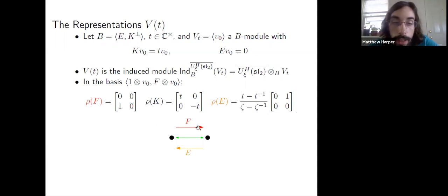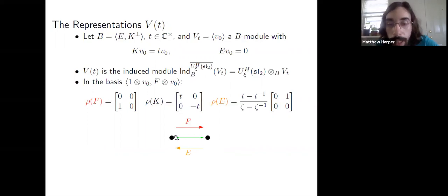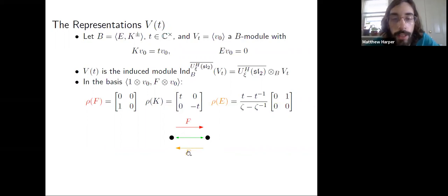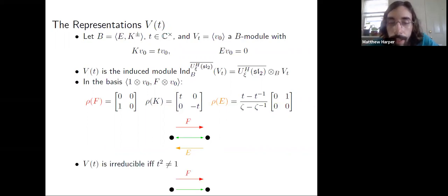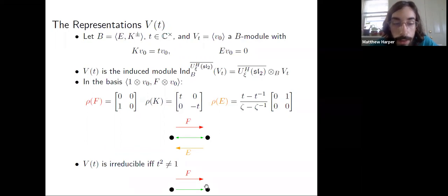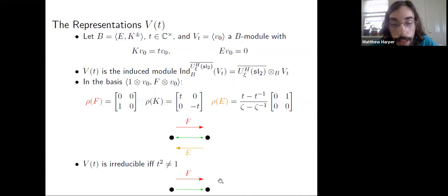I've got the F indicated in red and E in orange. I'm putting a green double arrow in between because later when we move to higher rank, I'll only be using these double-sided arrows. An important property here is that if t equals plus or minus one, then the action of E becomes zero in the entire representation, so V(t) becomes reducible with a sub-representation, and the two-headed green arrow becomes a single-headed green arrow.